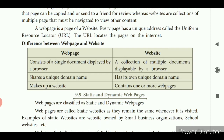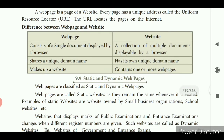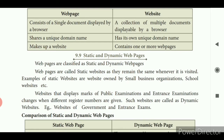What do you mean by static and dynamic web pages? We have two types: static and dynamic. Static web pages remain the same whenever visited. Examples of static websites are websites owned by small business organizations and school websites. Dynamic websites display changing content — for example, websites that display marks of public examinations change when different register numbers are given. Such websites are called dynamic because for each and every registration number the data changes.